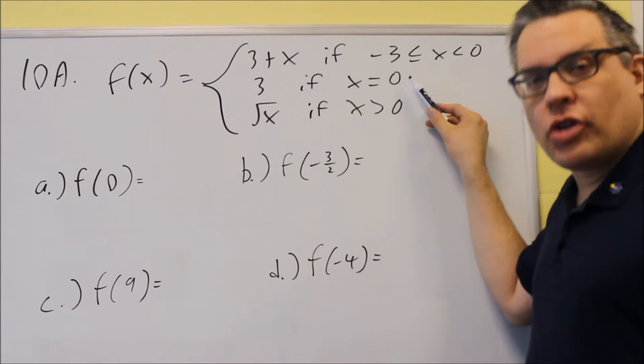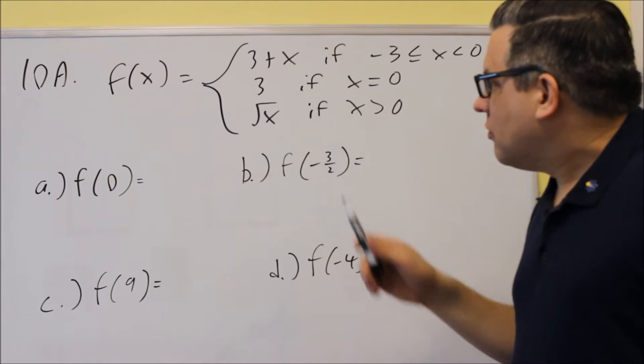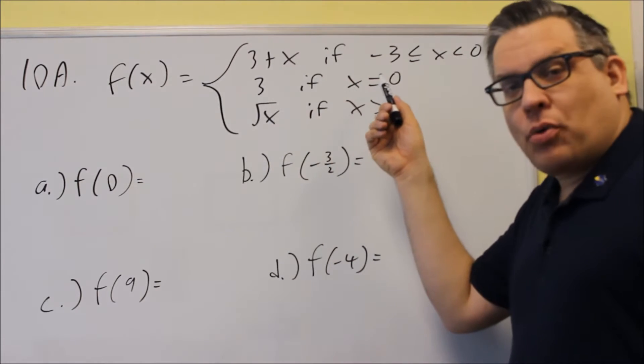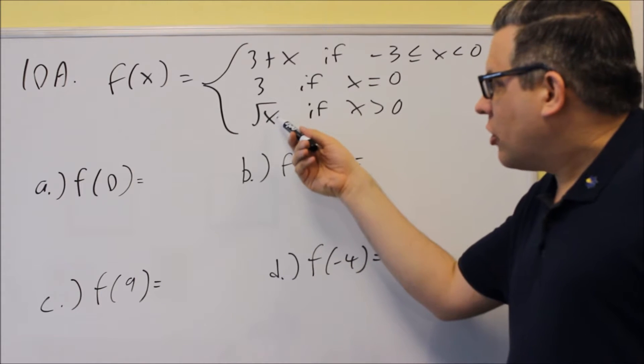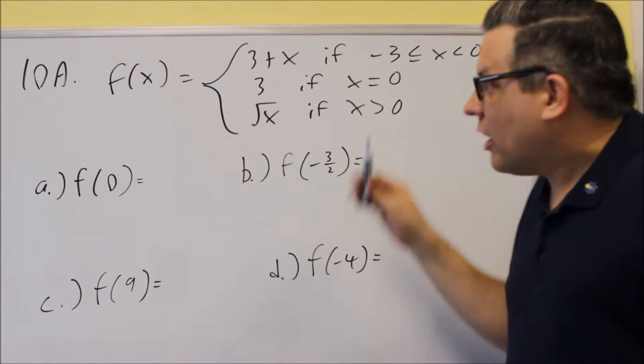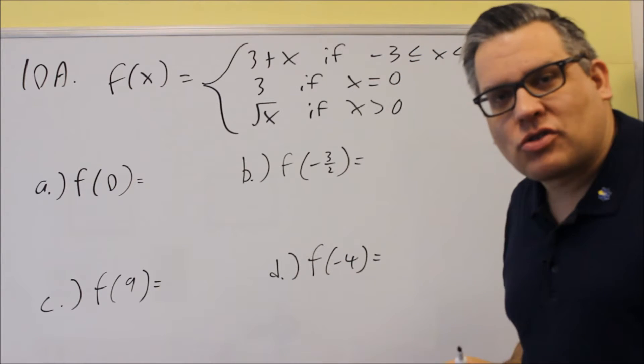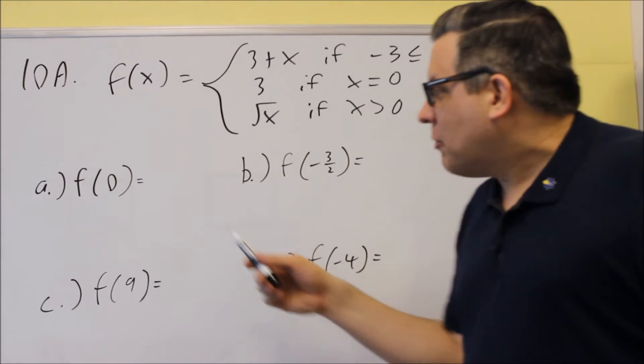If x is 0, so only when x is 0, we get 3 as our result. So basically this is just a point, 0, 3 is what you get. And the last one, the square root of x, you only use that when x is greater than 0. So piecewise, you have to make sure you follow the conditional statements that are on the end. So we have to follow those when we do these problems here.